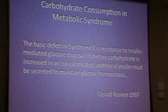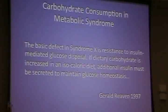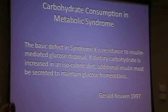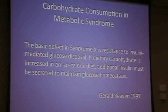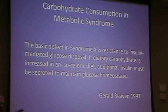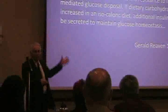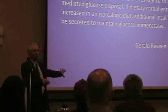Metabolic syndrome was first described by Gerald Reaven in the mid-1990s — he called it Syndrome X. He was looking at a cluster of things that all seemed to appear together and predisposed you to diabetes and cardiovascular disease. He noticed early on that insulin-mediated glucose disposal — insulin resistance — was the basic defect underlying metabolic syndrome, and that dietary carbohydrate drives the need for additional insulin secretion to maintain glucose homeostasis. Interestingly, as his ideas gained prominence, that carbohydrate component disappeared from his later work.